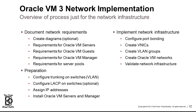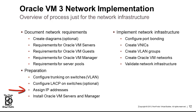Then you'll move on to specific preparatory tasks such as having your network admin configure the 802.1Q trunking on your switches for the VLANs. Then having your network admin configure LACP or EtherChannel on the switches if you're going to use bonding mode for dynamic link aggregation. Then you'd have your DNS administrator assign hostnames to IPs. And of course, install the Oracle VM servers and the manager.